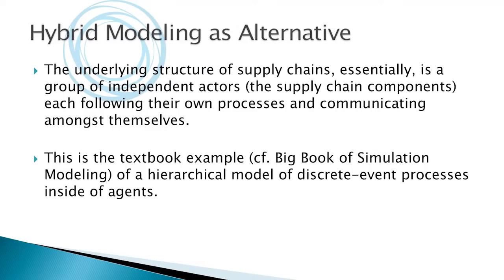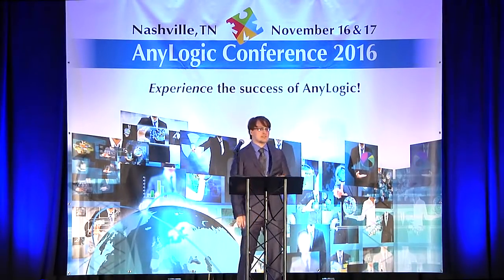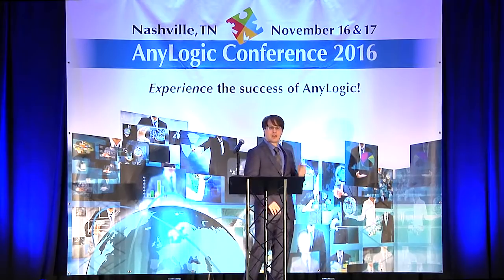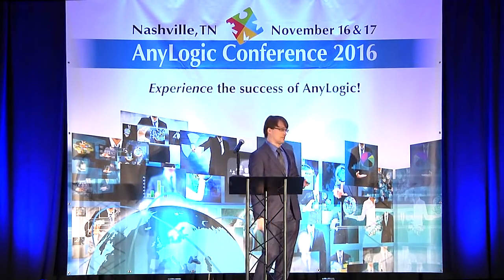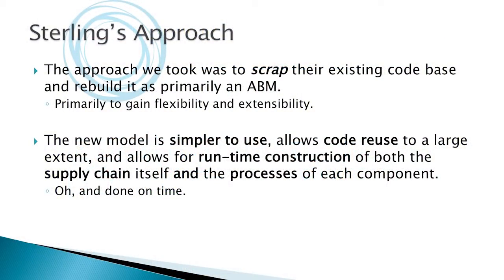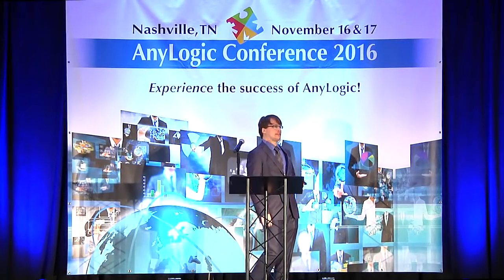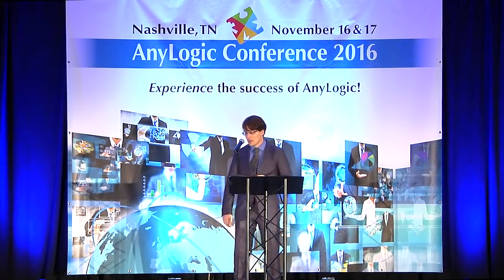We suggested building a hybrid model because the underlying structure of supply chains has individual parts that talk to each other with processes inside them — the textbook example from André's book of building a hierarchical model of agents with discrete events and processes inside them. So we scrapped their model — a bold move with only a week — went back to the value stream map they gave us, and rebuilt it as primarily agent-based, mainly to gain flexibility and extensibility.